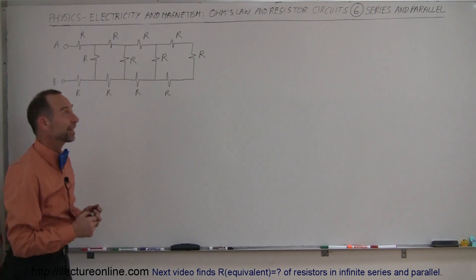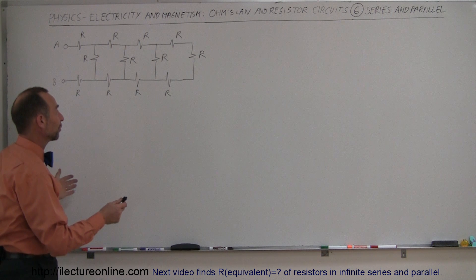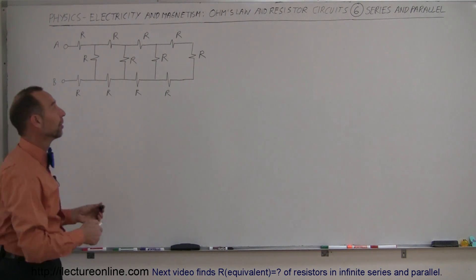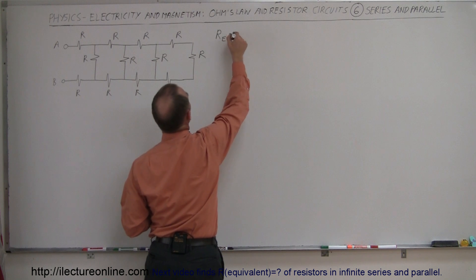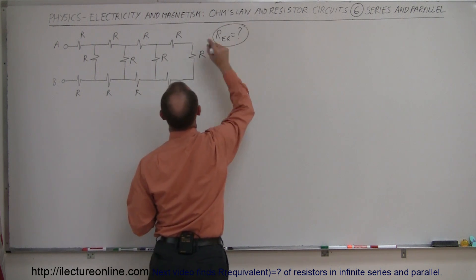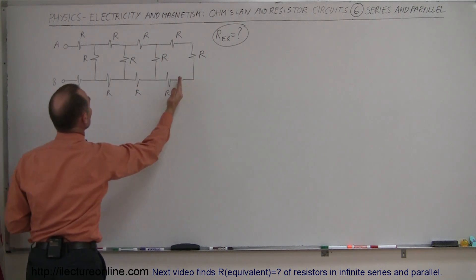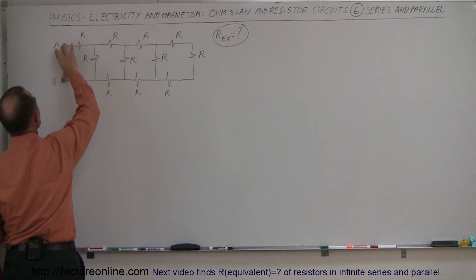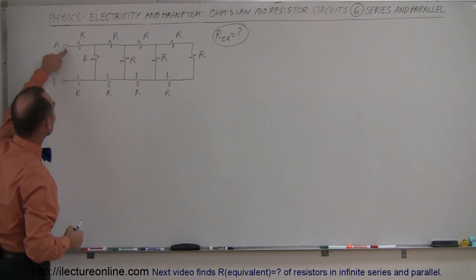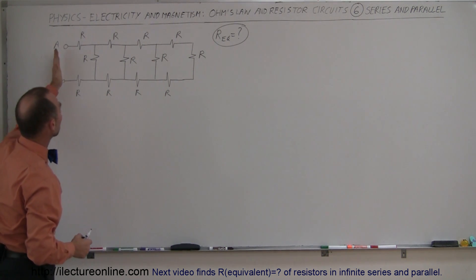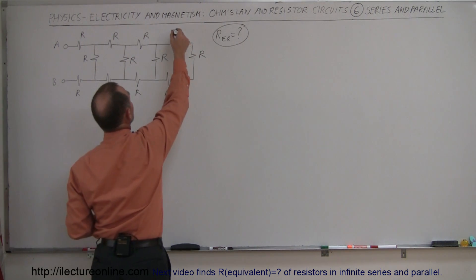Welcome to Electron Online. Here's our next example of how to take a circuit with resistors and simplify it down to a single equivalent resistor. What we're trying to find is the equivalent resistance of this particular circuit. When you have a circuit that looks like this, the best way to do it is to start from the very back and work yourself to the front where you have the terminal connectors. What they want to know is the equivalent resistance between A and D with all these resistors connected to it.